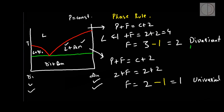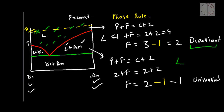Now let us look at why the liquid field is known as divariant. If I tell you we are in the field of only one liquid phase stable at temperature T1, a liquid of multiple different compositions can be stable. Hence, I need to mention both the temperature and the composition of the liquid phase — two variables — and thus these fields are known as divariant.